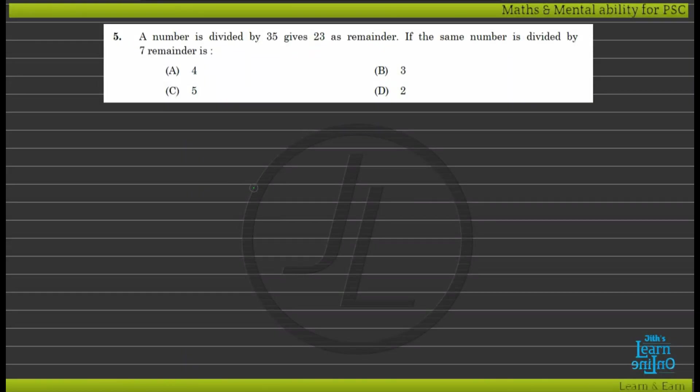A number divided by 35 gives 23 as a remainder. If the same number is divided by 7, what is the remainder?